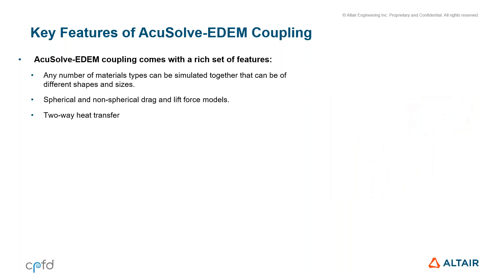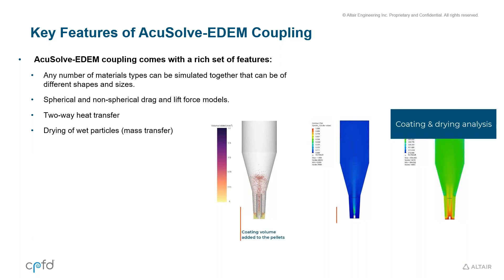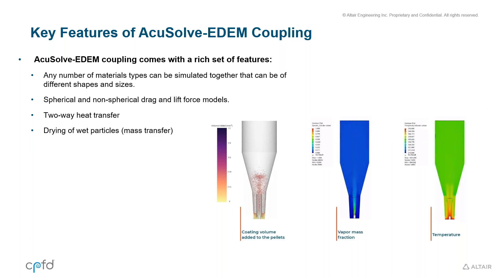Another feature is two-way heat transfer — you can simulate heat transfer between solid and fluid phases. In addition to heat and momentum transfer, you can also simulate the drying of particles such as fruit, grain drying, or drying of ore particles. Using the mass transfer feature in the AccuSolve–EDEM coupling, users can simulate processes such as tablet coating, drying, rotary dryers, and similar applications.